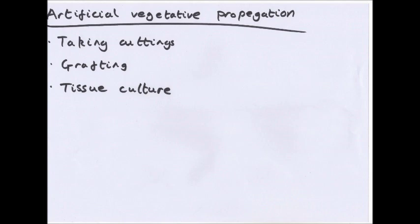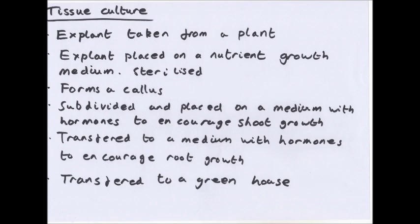Tissue culture is the one you'll be questioned on most, as it can be used on huge numbers — unlike grafting and cuttings. The technique is called micropropagation, and many household plants such as orchids are produced this way. A small piece of tissue, called an explant, is taken from the shoot tip or root tips of the plant to be cloned — that's where the meristematic tissue and dividing cells are. The explant is placed on a sterilised nutrient growth medium, and forms a callus — undifferentiated cells that divide but don't yet differentiate.